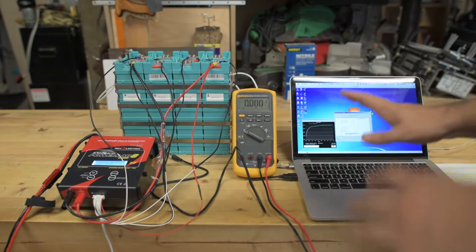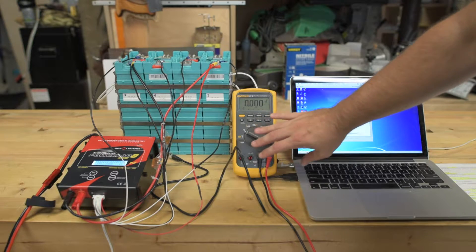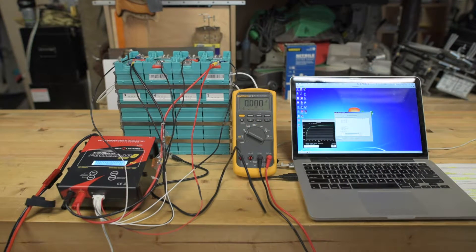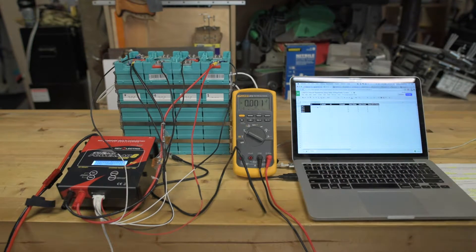Things that we need for this: we've got a CellPro PowerLab 8, we're going to use that for discharge, a Fluke 87 multimeter, and I've got a computer with a Google spreadsheet pulled up.